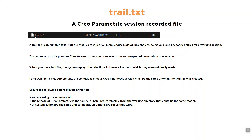There is also trail.txt.1 — this versioning means you used different sessions. As per the session, trail.txt.1 gets created. The number 1 represents the first session, 2 represents the second session. There may be multiple trail.txt files, so you need to look for the latest one from the session you lost. You can check the time and date to find the last session you need to recover.